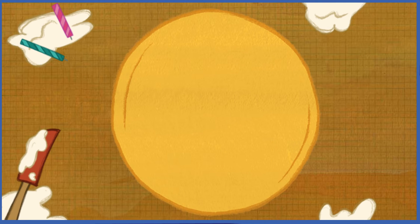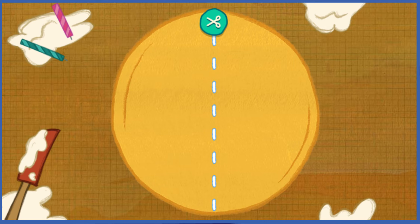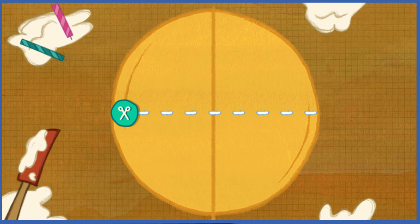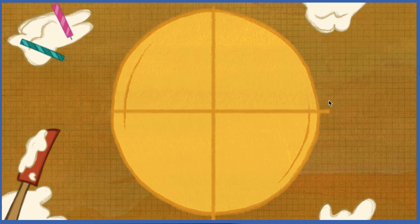Let's cut the cake so everybody has a piece that's the same size! We have four guests at the party, so we need four pieces! Move your mouse this way to cut the cake in half! Now let's make these two bigger pieces into four. Now we got four pieces! Each piece is one-fourth of the cake!